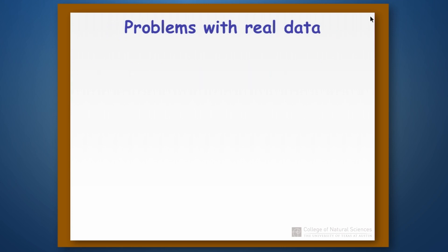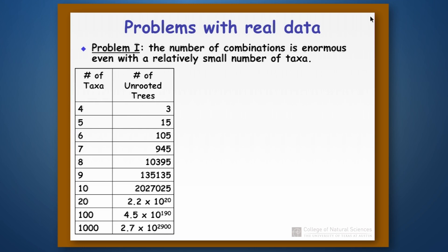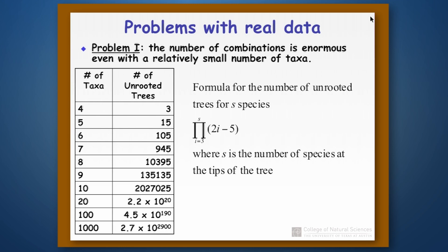What I'd like to do here is talk about some of the issues with real data and what we can do about it. The first problem is simply that the number of combinations of trees becomes really enormous even with a relatively small number of species or taxa. This chart shows how fast the number of unrooted trees goes up — four species gives three unrooted trees, five species is 15, and so forth. It goes up extremely quickly because the formula is a power series where you multiply the different elements together. See the bonus video if you want to understand this in more detail.